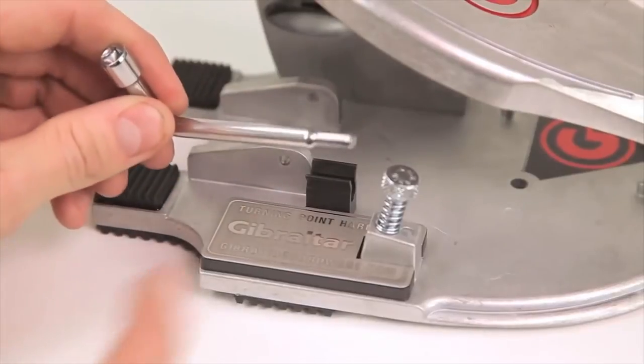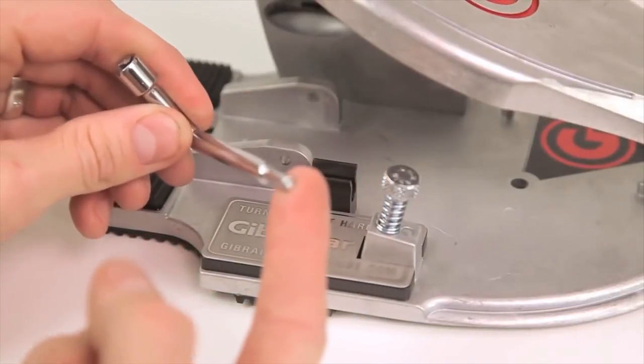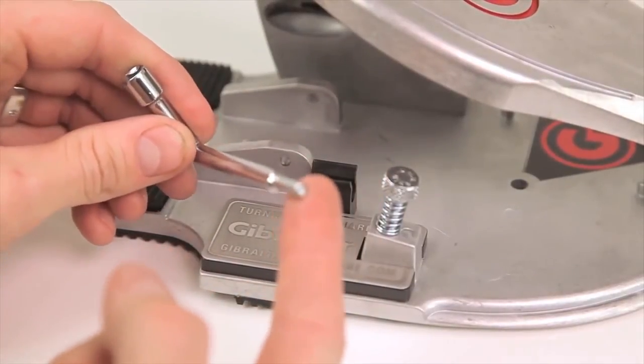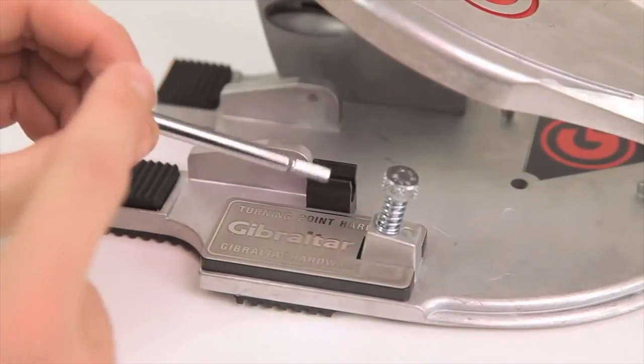It's got an onboard toolkit so you can make easy adjustments when you need to. One end is an allen key and the other end is a drum key.